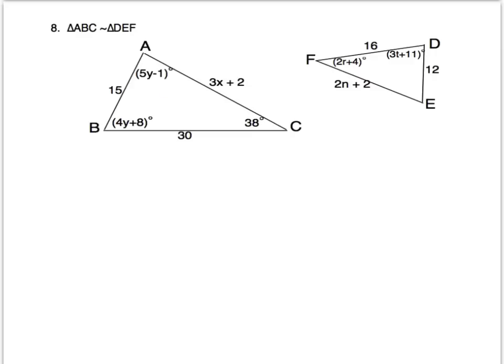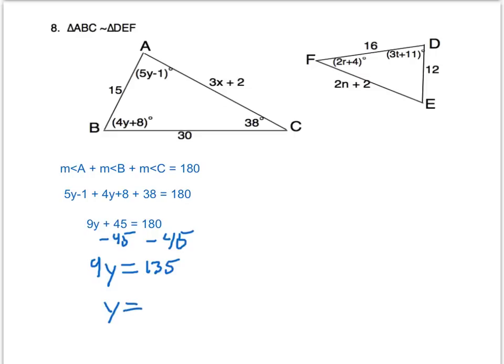The triangle sum theorem says that all three of those angles have to add up to 180. So we know angle A, B, and C add up to 180. So therefore we get this new equation. So let's combine like terms. If we subtract 45 from both sides, and then divide both sides by 9, we get that y is equal to 15.